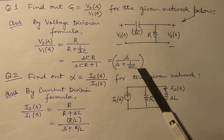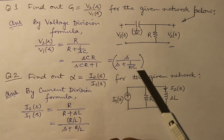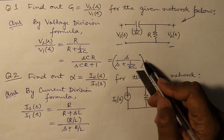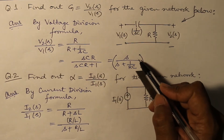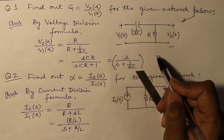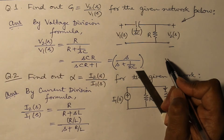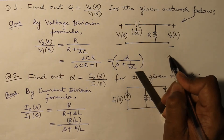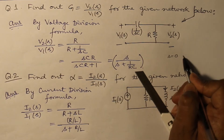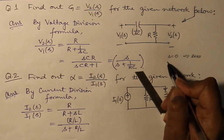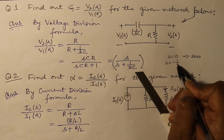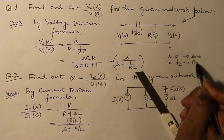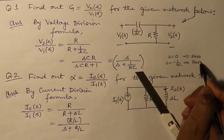One important point: when you equate the numerator to zero, we get a zero. There are poles and zeros of a transfer function. At S equal to zero, we have a zero, and at S equal to minus 1 over RC, we have a pole. We will come on to the poles and zeros later on.